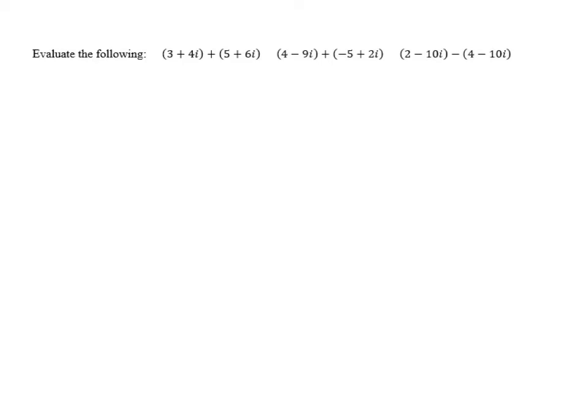We'll start with the first, 3 plus 4i plus 5 plus 6i. When we're adding two complex numbers, the parentheses here aren't necessary. They just exist to show which is the first and which is the second number, so we don't actually change the problem at all if we rewrite it without the parentheses. This gives us 3 plus 4i plus 5 plus 6i.